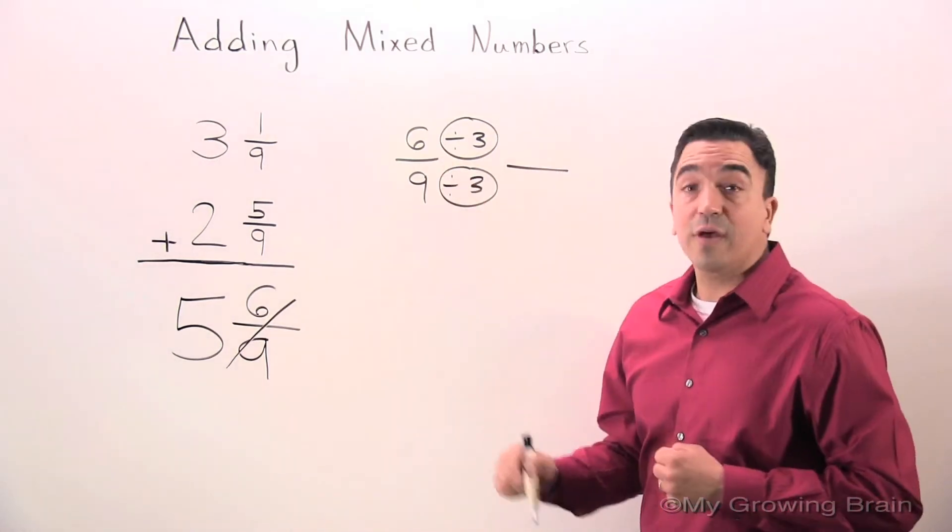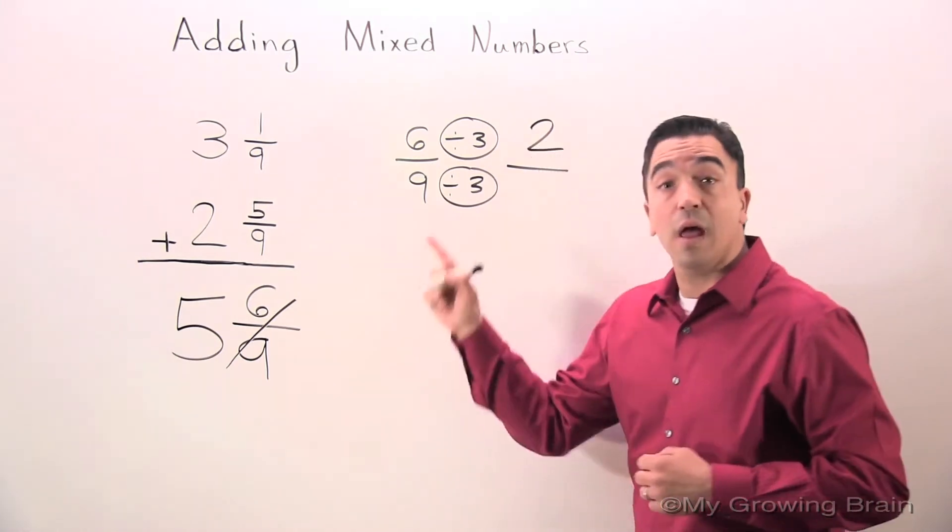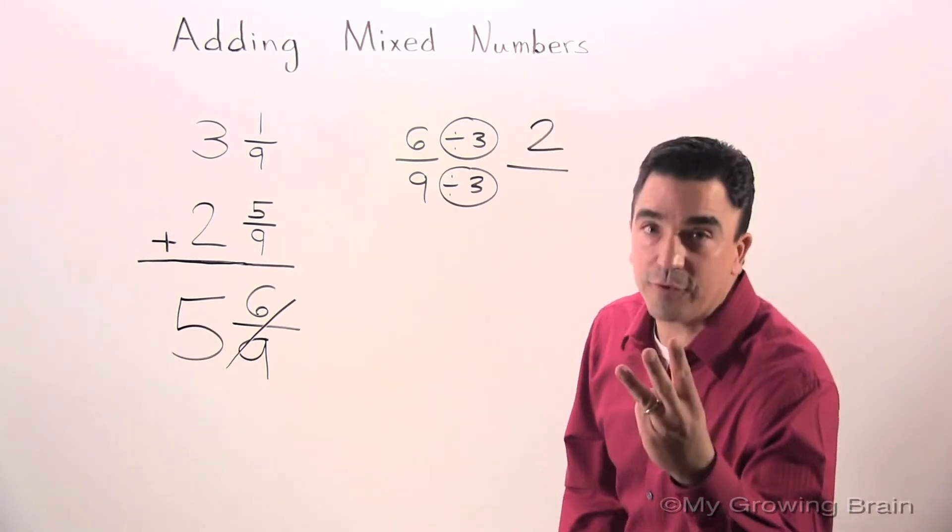6 divided by 3 is 2. 9 divided by 3 is 3.